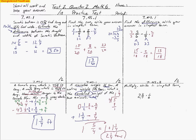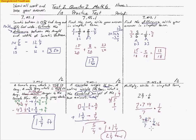Here we're multiplying a mixed number by a fraction. We have to change the mixed number to an improper fraction: the whole number times the denominator plus the numerator, all over the denominator. So 2 times 7 plus 4 gives 18 sevenths, times 1 sixth. We can cross cancel — 6 goes into 18 three times — so we divide 18 by 6 to get 3, and divide 6 by 6 to get 1. That leaves 3 sevenths times 1 over 1, which equals 3 sevenths in simplest form.